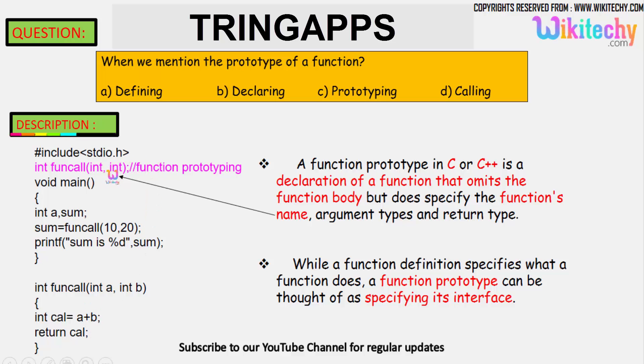You've got two arguments, integer, and the function is returning integer. While a function definition specifies what a function does, a function prototype can be thought of as specifying its interface - what is the nature of the function.